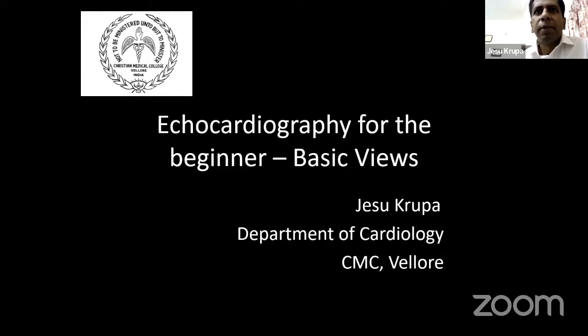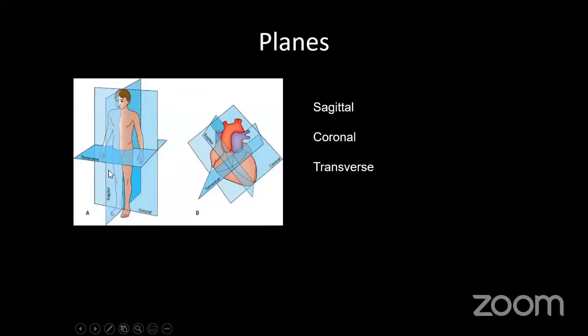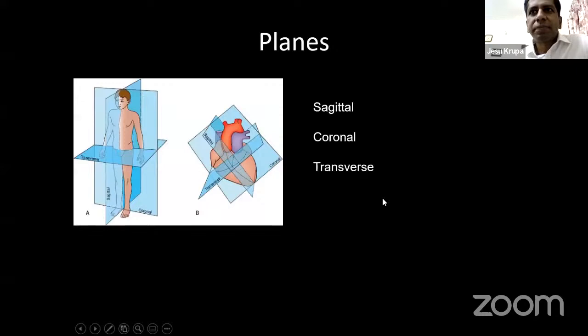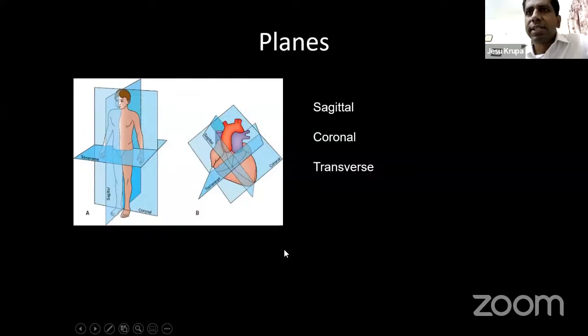We will begin with the planes. All of us know we have the sagittal plane, the coronal plane, and the transverse plane. The same concept can be translated onto the heart. We can extend the same idea to the heart, dividing it into sagittal, coronal, or transverse sections. This logic forms the basis of all tomographic or plane-based imaging — whether it is echocardiography, CT, or MRI — they follow similar principles.